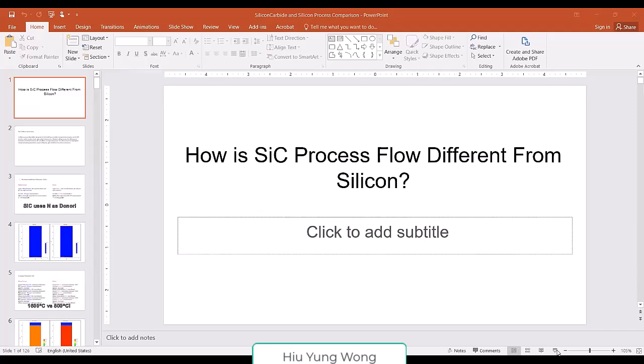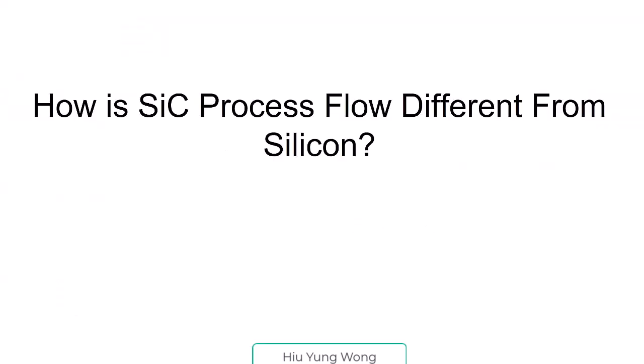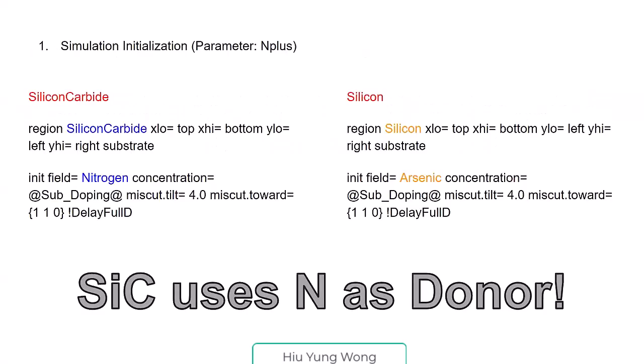Can you see my slides? How is silicon carbide process flow different from silicon? Here we try to show you in silicon carbide and silicon. First of all, the dopant is very different. Silicon uses arsenide, silicon carbide uses nitrogen. Nitrogen is a dopant—it's impossible in silicon.